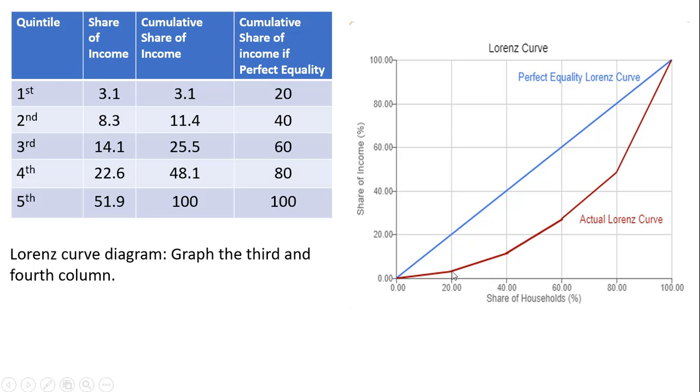I come across, right about here, that's where the 3.1% is going to be. Then I go to the bottom 40% and the share of income going to the bottom 40% is 11.4%. That's where this coordinate is, right about 11.4%.